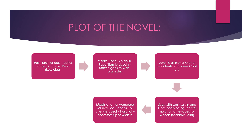When the novel begins, Hagar is a 90-year-old woman. She is struggling because she is very sick — she has arthritis and other gastrointestinal problems — and she is living with her son Marvin and his wife Doris. She finds out that Marvin and Doris intend to send her to an old age home, a nursing home. She does not want to go because for her the nursing home represents death.